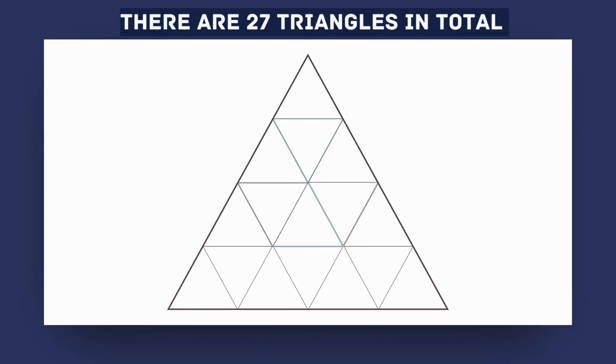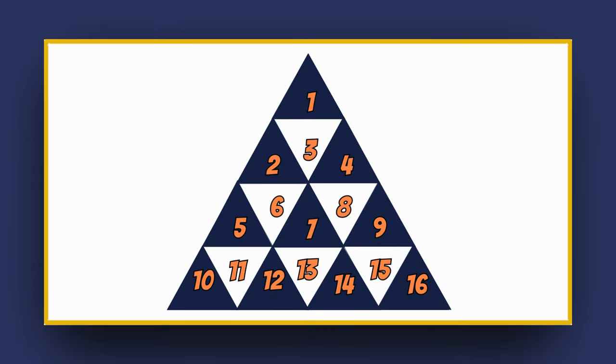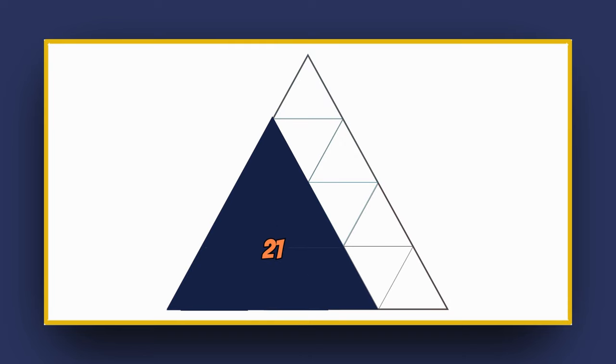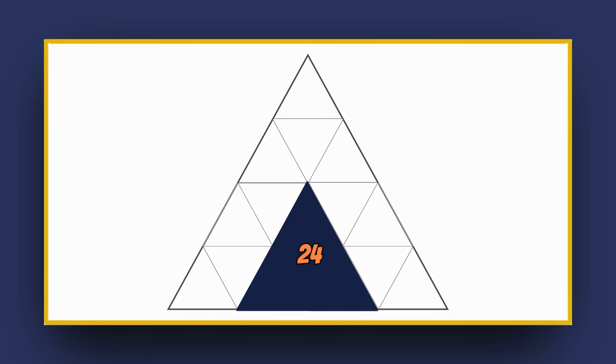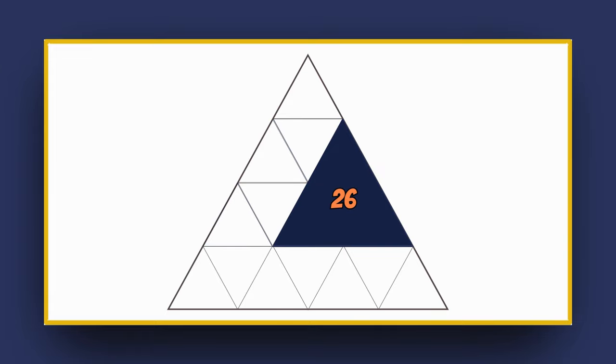There are 27 triangles in total. How did you find this round? This test is also very tricky. Keep going, you are pushing your brain to new heights.